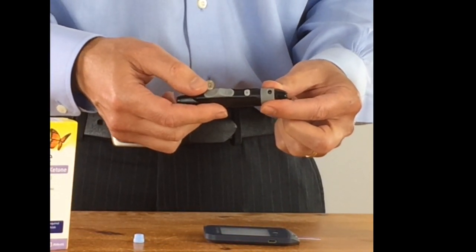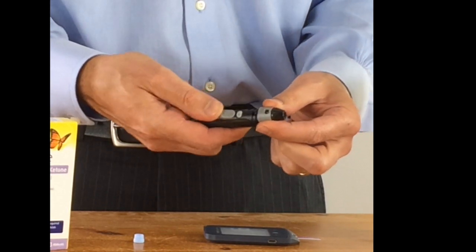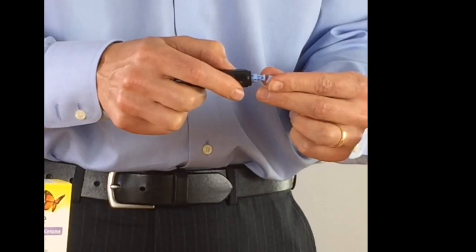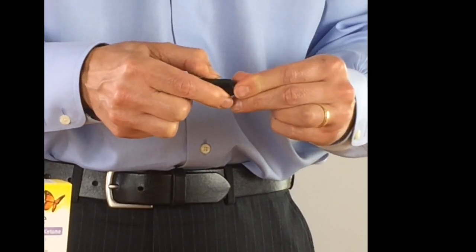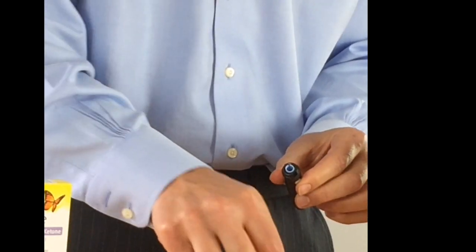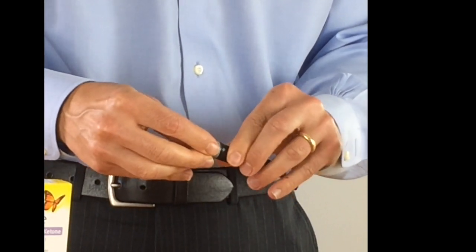After that, you need to dispose of your sharp. So again, pop this off, put the round part of the blue to cover the needle, and then you can take that out and safely dispose of the lancet without it affecting anybody else.